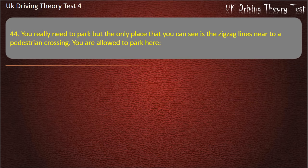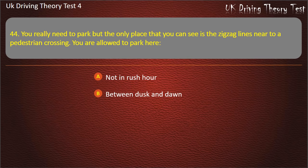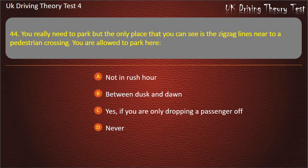Question 44. You really need to park but the only place you can see is the zigzag lines near a pedestrian crossing. Are you allowed to park here? Not in rush hour; between dusk and dawn; yes, if you are only dropping a passenger off; or never. Answer: Never.